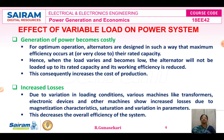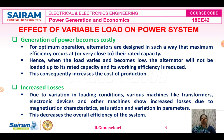The second effect is increased losses due to variation in load conditions. For example, the load can vary at very early morning, late morning, late evening, and midnight. Due to variation in loading conditions, various machines like transformers and other electronic devices experience increased losses due to magnetization characteristics, saturations, and variation in parameters. This decreases the overall efficiency of the system.